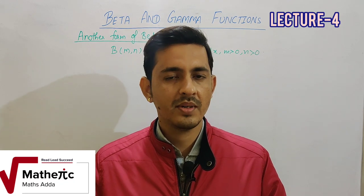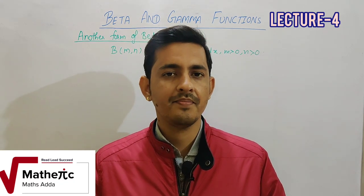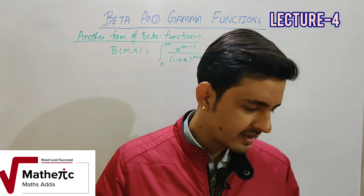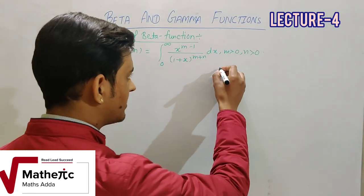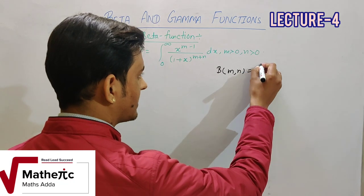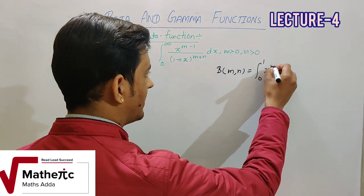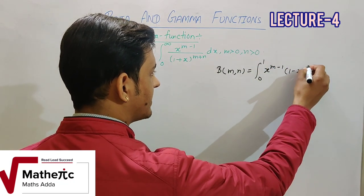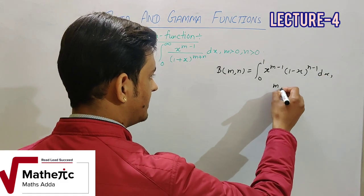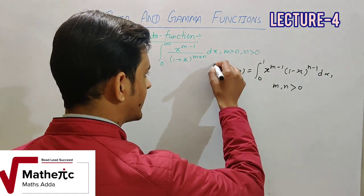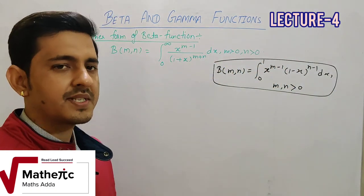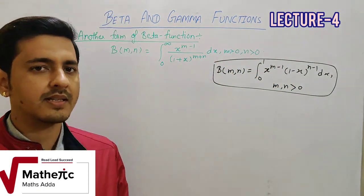We will understand the first form of the beta function: Beta(m,n) = ∫₀¹ x^(m-1)(1-x)^(n-1) dx, where m and n are both positive. This is the first definition, and we have already done numericals based on it.